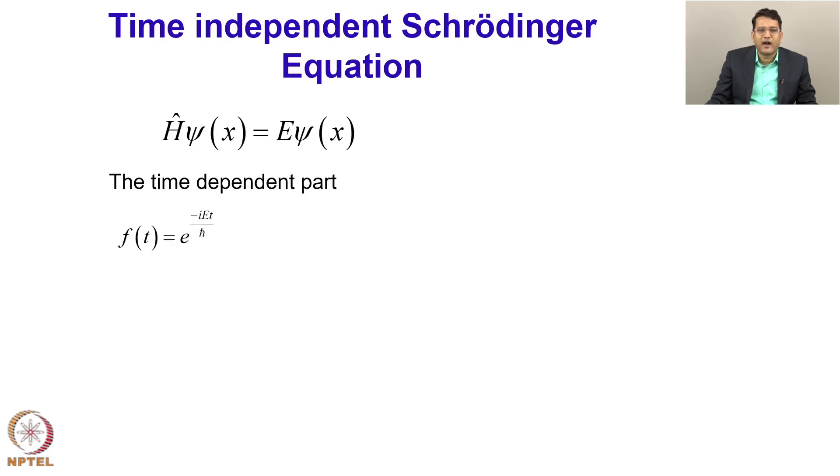And of course, there is a time dependent part, that is f(t) equals exponential minus i e t by h cross. So, my total wave function becomes psi(x), a space dependent part, as well as an exponential time dependent part, and this form of the wave function is often called a stationary state.